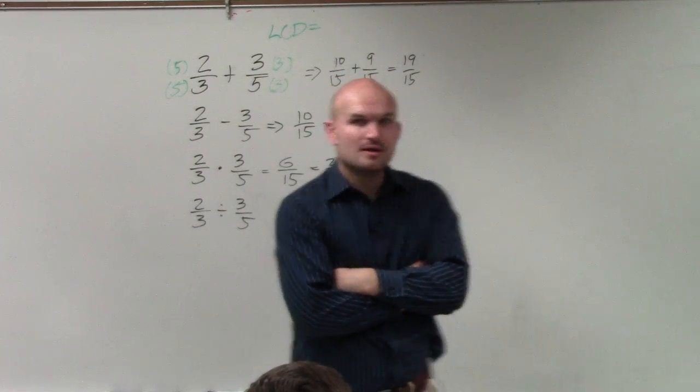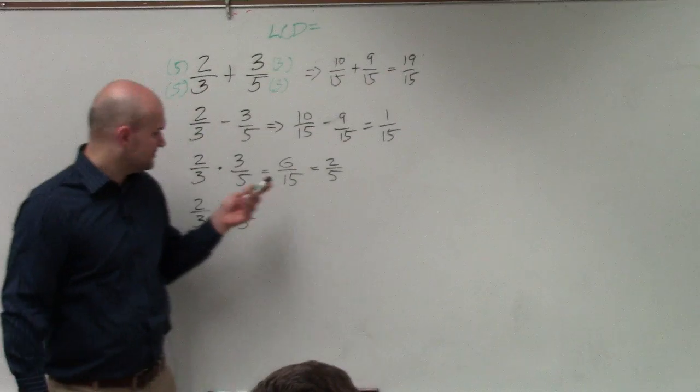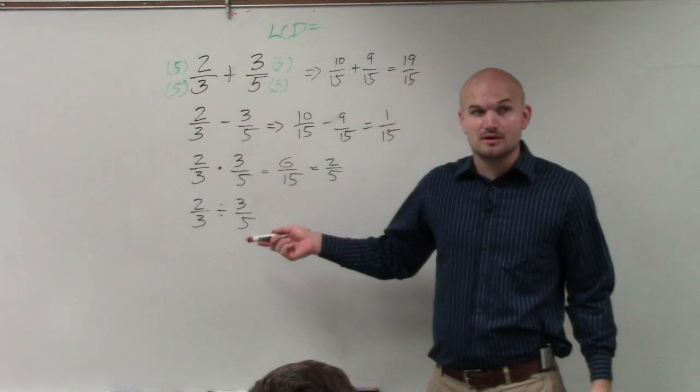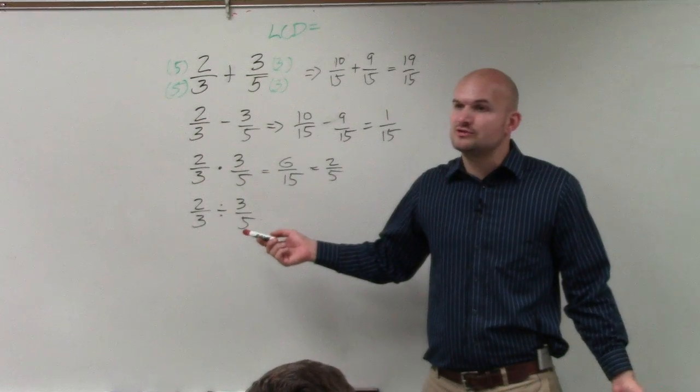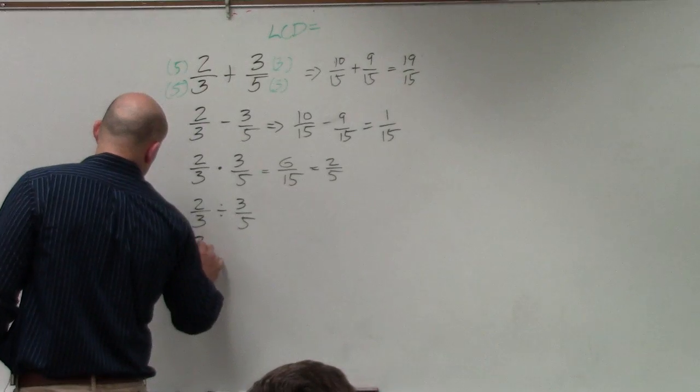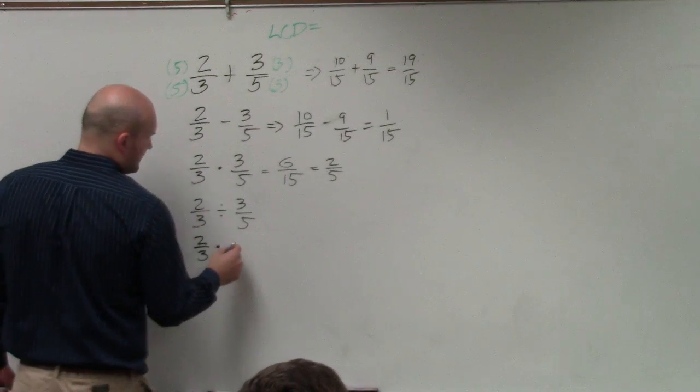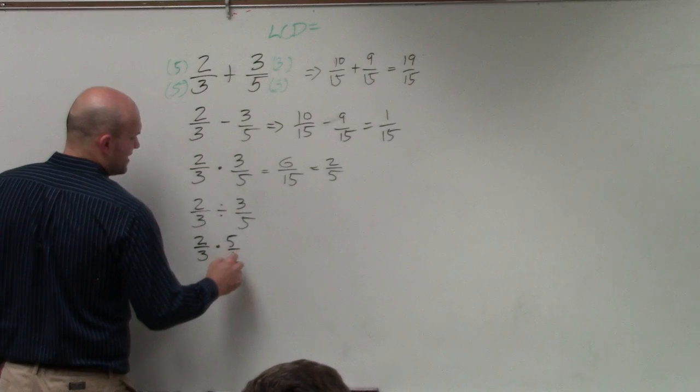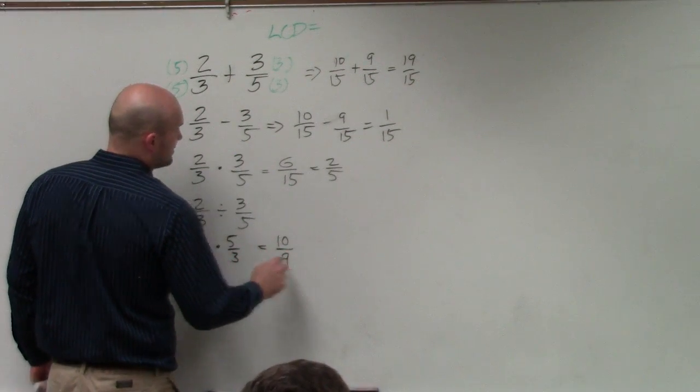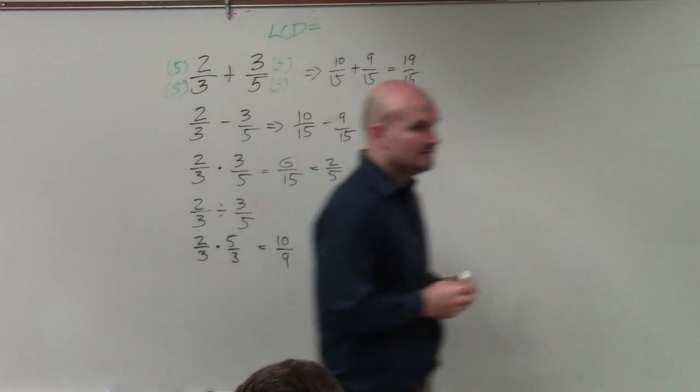Okay. So what I'm trying to show you is here I'm trying to divide by a number. Now this one's a fraction. Well, it would be just as simple to go ahead and multiply by its reciprocal. So the reciprocal of 3 fifths is 5 thirds. Now I just multiply across and I get 10 over 9. Final answer.